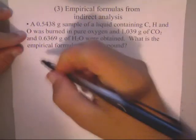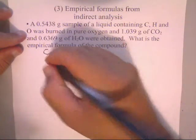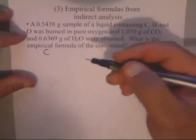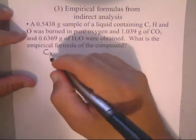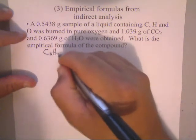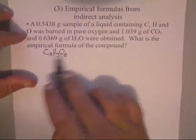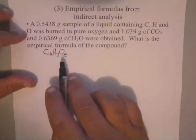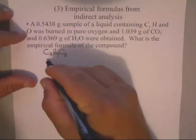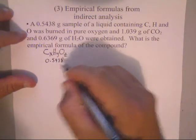They took some compound that's made up of CX, the X representing some number, hydrogen Y representing some number, and oxygen Z representing some number. So they've got some type of carbon, hydrogen, and oxygen compound here that they have 0.5438 grams worth.